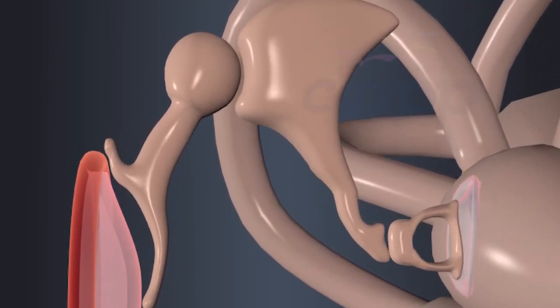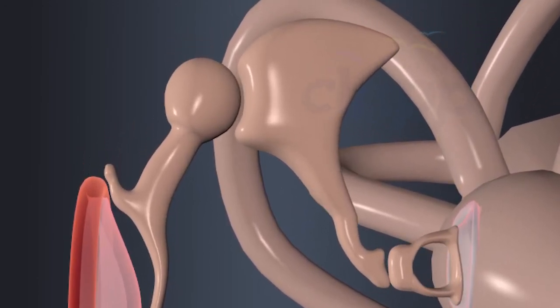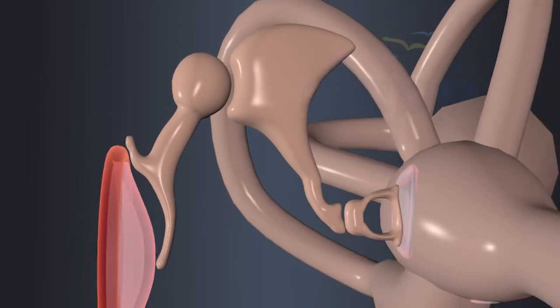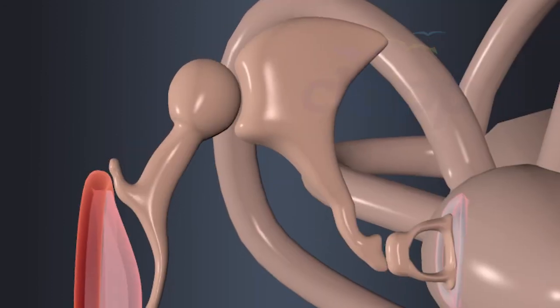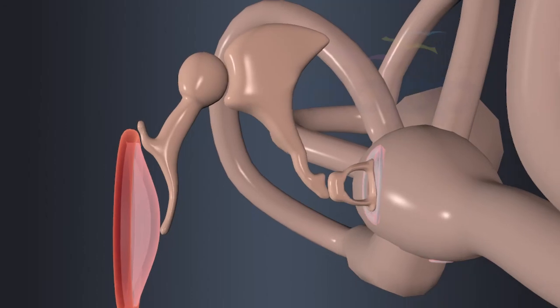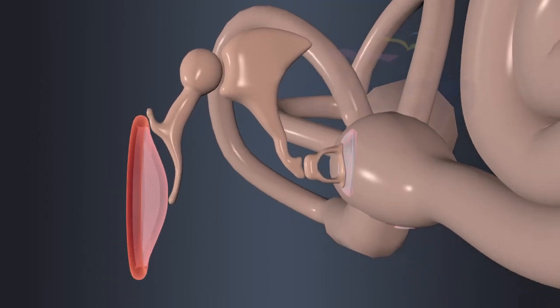The chain of ossicles, malleus, incus, and stapes, acts like a lever system which allows for efficient transmission of sound energy from the relatively large tympanum to the smaller oval window.